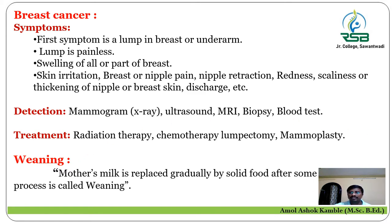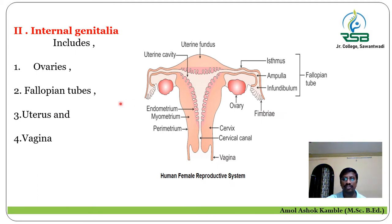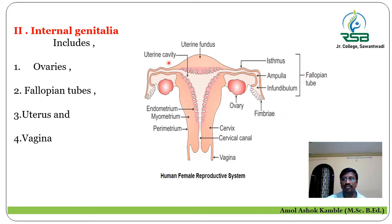Let us now move towards the major part of today's lecture, that is the internal genitalia — the internal structure of the female reproductive system. The diagram clearly shows the human female reproductive system with the various structures associated with the internal genitalia. Broadly, the internal genitalia includes a pair of ovaries.